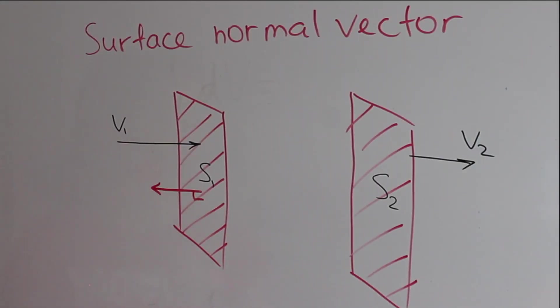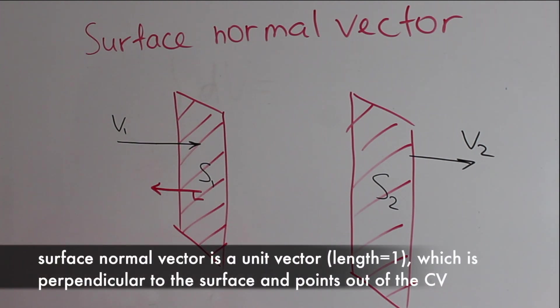So a surface normal vector is defined as a unit vector, which means it has length 1, which is perpendicular to the surface, that's why it's called normal, and it points in the direction out of the control volume.